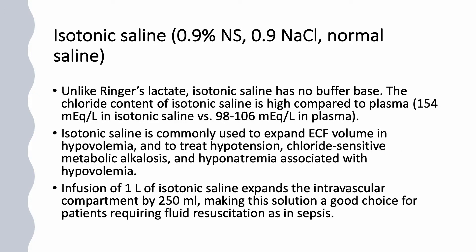Unlike lactated Ringer's, isotonic saline has no buffer base. It has a high chloride content of 154 mEq/L, which is much higher than plasma chloride of 98–106 mEq/L. Isotonic saline expands the extracellular volume and stays in the extracellular space, making it useful for hypovolemia, hypotension, chloride-sensitive metabolic alkalosis, and hypovolemic hyponatremia. Of a one-liter infusion, 250 mL expands the intravascular compartment and 750 mL distributes to the interstitium, making it a good choice for resuscitation in sepsis.